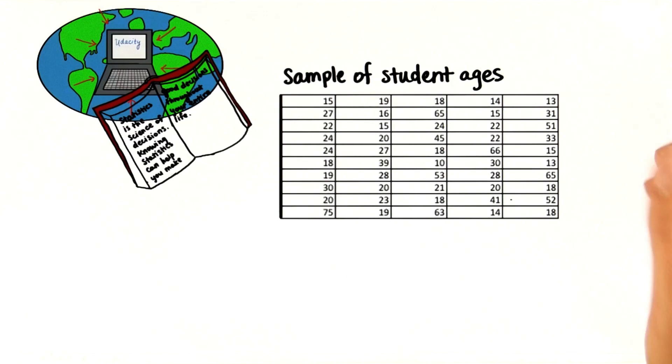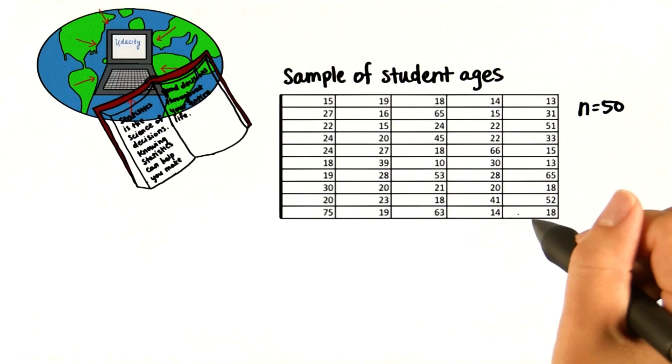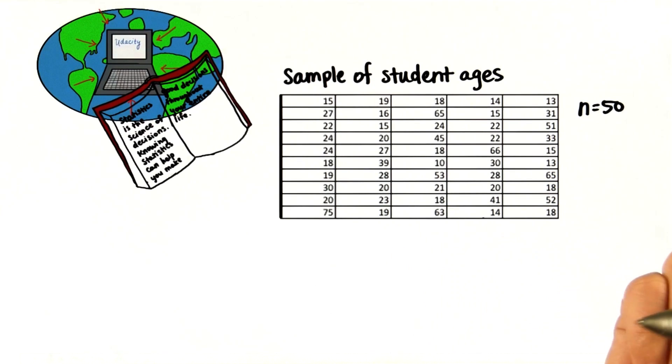So here's a sample of student ages. And again, we have 50. How can we analyze this data the same way we analyze the country data?